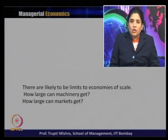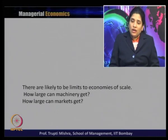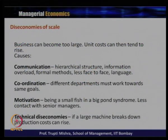Firms gain lower average cost as scale of operation increases. But there is a limit — how large can machinery get, and how large can the market get? There is a limit to the size of machinery and the size of market, which leads to limits of economies of scale, beyond which diseconomies begin. When a business can be too large, unit costs tend to rise due to: communication problems from hierarchical structure, information overload, formal methods, less face-to-face meetings, language barriers, and coordination issues where different departments must work toward the same goal.